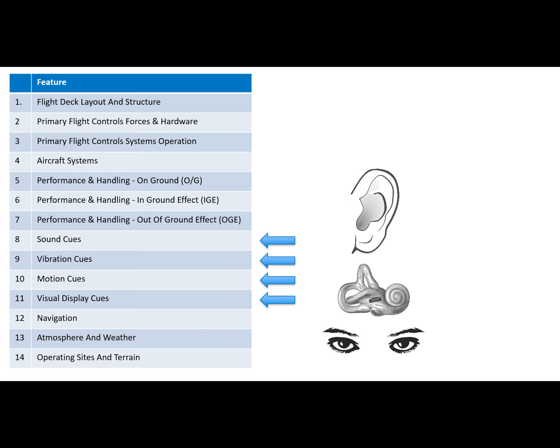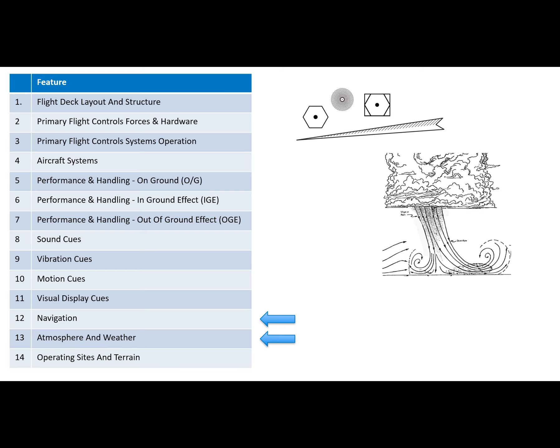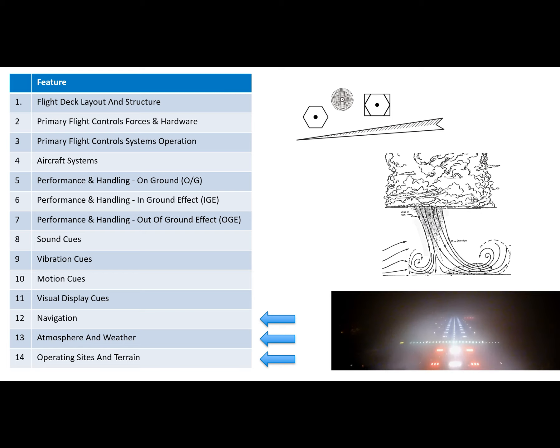Features eight through eleven concern the cueing — how our senses are stimulated through sound, motion, and visual systems. The visual display cue feature concerns visual system characteristics like field of view, brightness, and contrast. Feature number 12 concerns simulation of navigation aids such as their range and directionality. Feature number 13 concerns atmospheric phenomena such as winds and wind shears. Feature number 14 concerns the visual representation of aerodromes and other operating sites.